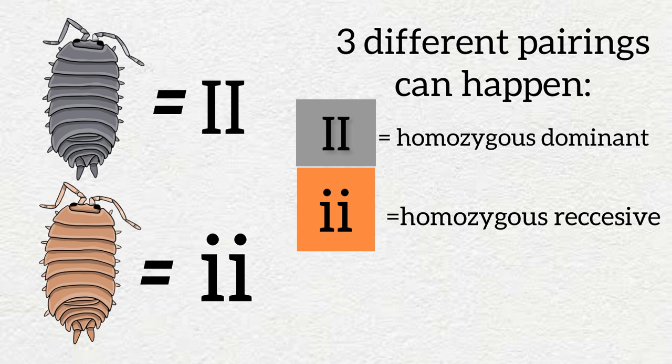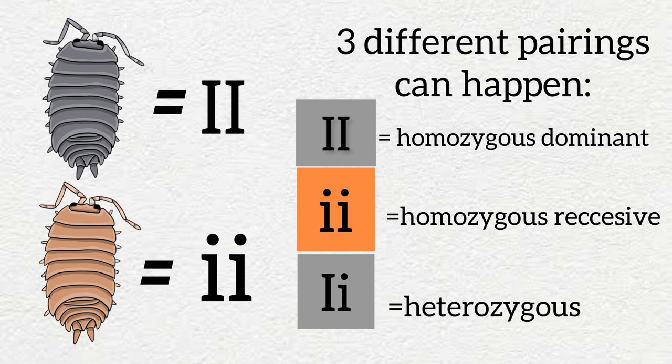And there could also be one of each, one big I and one little i. In cases like this the individuals will be gray because the dominant allele will always express over the recessive. Individuals with one dominant and one recessive allele are called heterozygous.